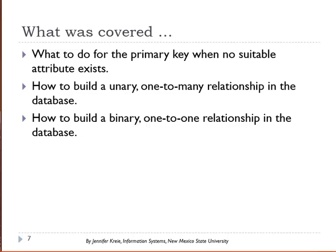To summarize: we've looked at what to do for the primary key when we don't have a suitable attribute — we simply create a field and use it as the primary key. We've also looked at how to build a unary one-to-many relationship and how to build a binary one-to-one relationship.